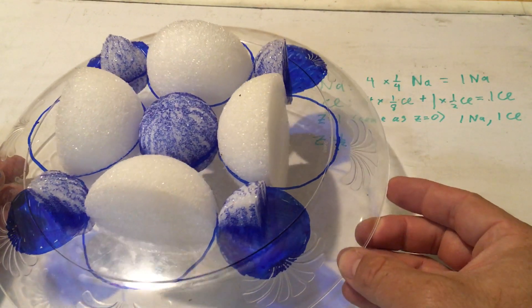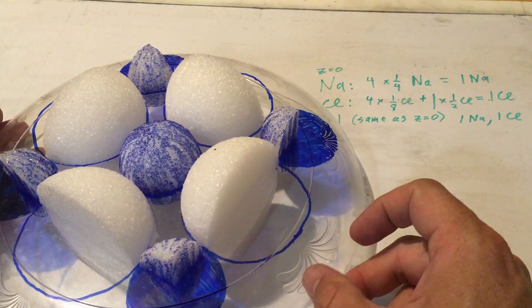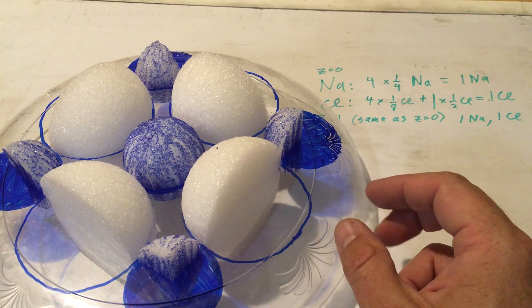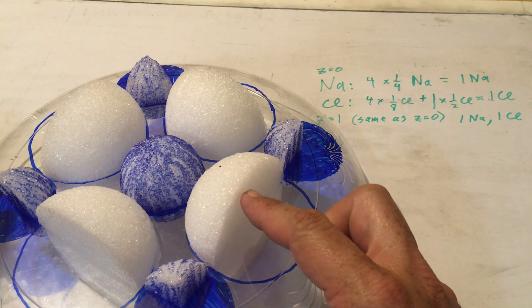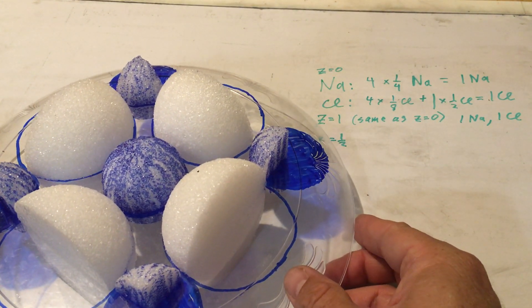So the plane is represented by this clear sheet here, this plate. z equals one half plane, and I have parts of spheres above and parts of spheres below this particular plane.